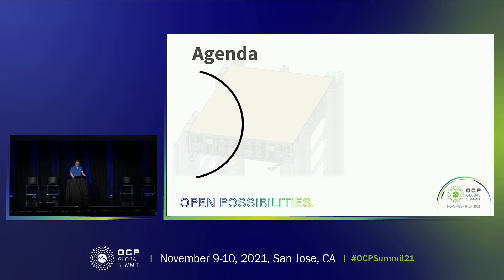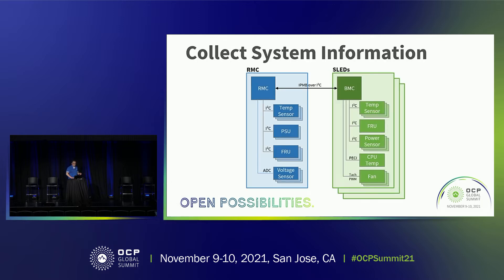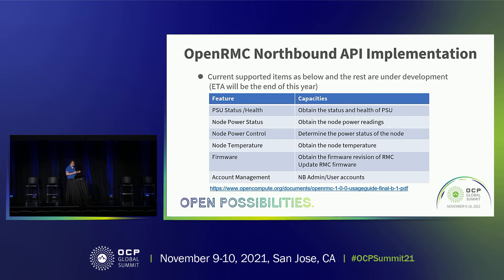Next, we'll talk about the northbound API implementation. As mentioned, the RMC collects various data for temperature, power supply status, and more through the IPMB. It also communicates with the BMC on each sled, including fan status. The RMC communicates back with the host via northbound API, providing status and controls for PSU status, sled power status and controls, and thermal information for each sled. In addition, the northbound API also has account management for administration controls.